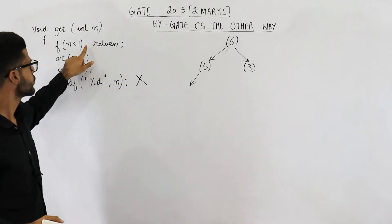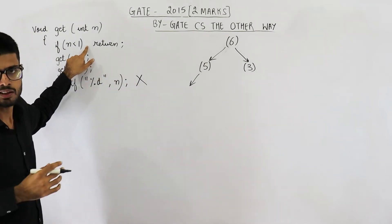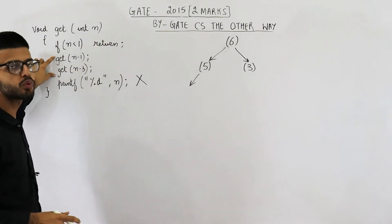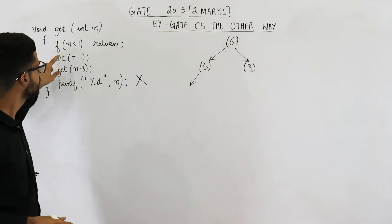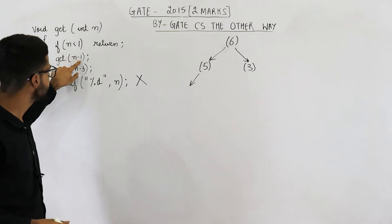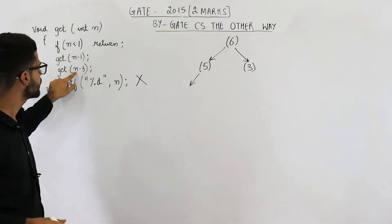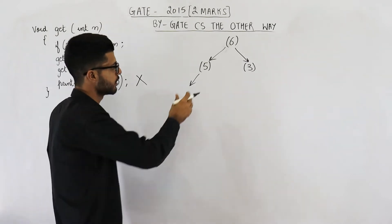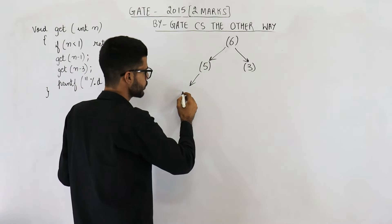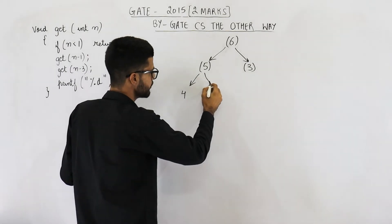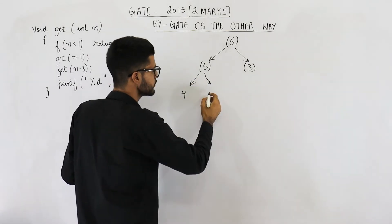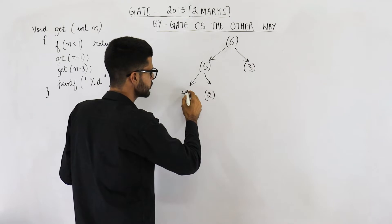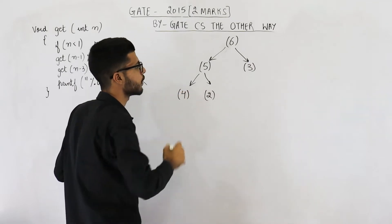5 is not less than 1, that means we will not return. Instead we will make two function calls with 5 minus 1 and 5 minus 3 as parameters. So 5 minus 1 is 4 and 5 minus 3 is 2. So these two functions are called.